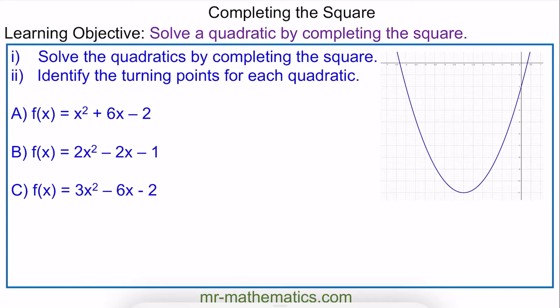Welcome to our lesson on finding the roots of a quadratic equation and the coordinate of a turning point, both by completing the square. We're going to find the roots of this quadratic function, which are the values of x when y equals 0 — the two points marked here — and the coordinate of the turning point, which is where we change from a negative gradient going downwards to a positive gradient going upwards. To do this we're going to complete the square.